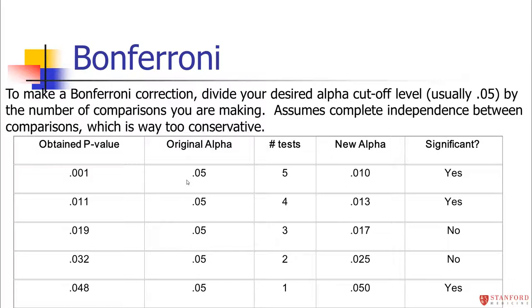So if you want to keep your overall error rate at 0.05 and run five tests, you only call something significant if the p-value is less than 0.01. For example, a p-value of 0.001 with five tests would still be significant since it's below 0.01. If you ran four tests, the new significance level would be 0.013 (0.05 divided by 4). You're just dividing 0.05 by the number of tests to get a new cutoff for statistical significance.